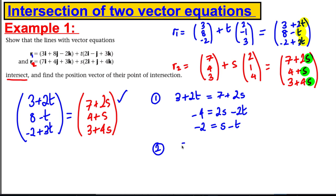From this one, let's get another equation. I have 8-t would be 4+s. Let's get it in the form s and t. So let's add t to both sides and take away 4. I will get 4 equals s+t. That's my second equation.